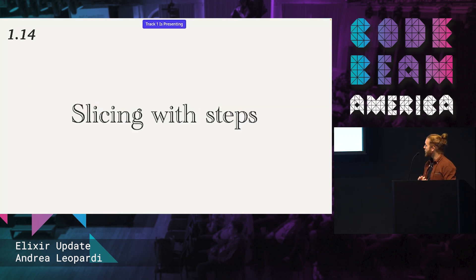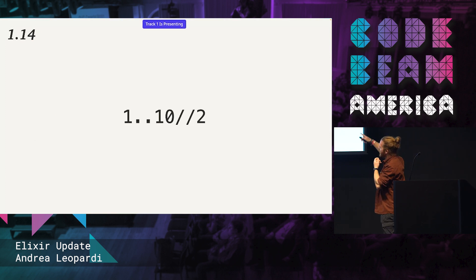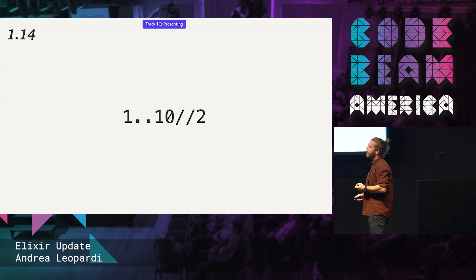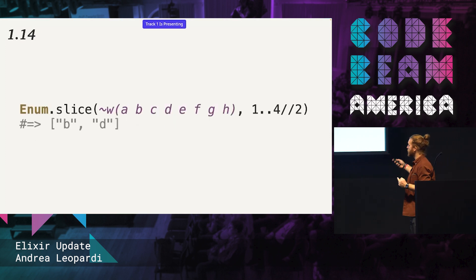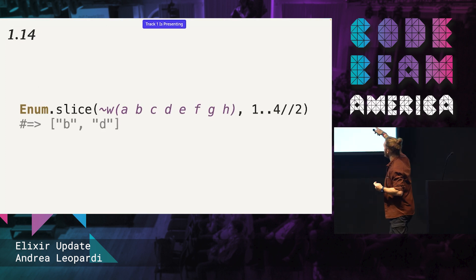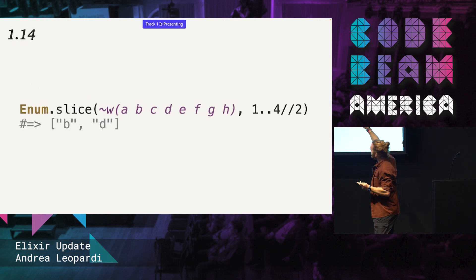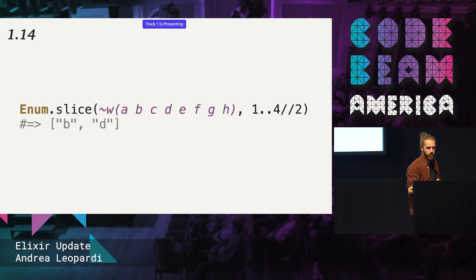In 1.14 we also have slicing with steps. We introduced stepped ranges a while ago — that's a range where the step is two instead of the default one. We released this before but never used it for any APIs. This is the first release that actually introduces something using it: enum slice can now slice with a range that takes a step, so instead of taking the first to fourth element, it takes elements stepped every two. A very minor thing, but we're starting to use this API.